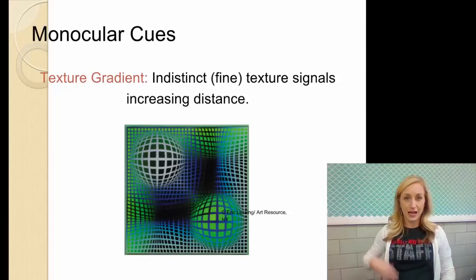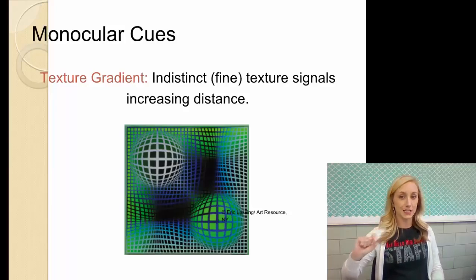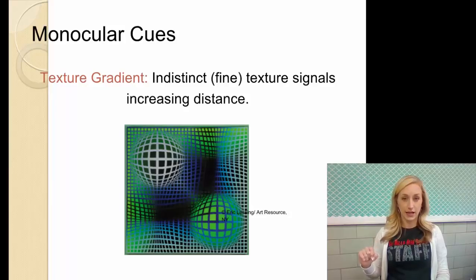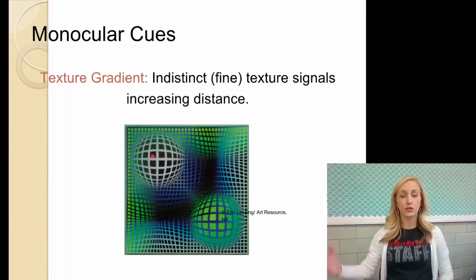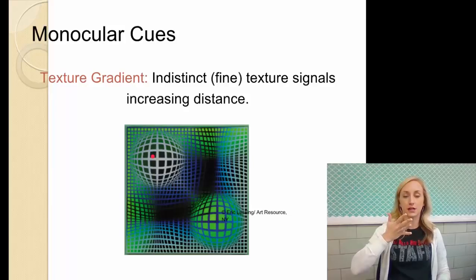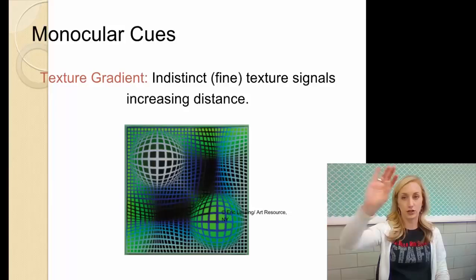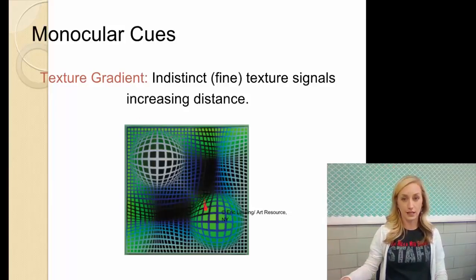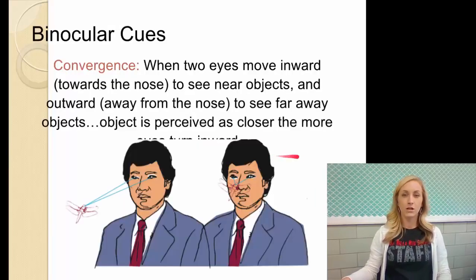Texture gradient. So texture allows us to see depth and distance. So indistinct or fine texture, it signals increasing distance. So the bigger the texture, which appears in these like spheres here, the closer it tends to like pop out at us. So the finer indistinct texture, the smaller the texture, it appears to be farther away. Like in these, the color kind of contributes to it too, but we can't see that detail.